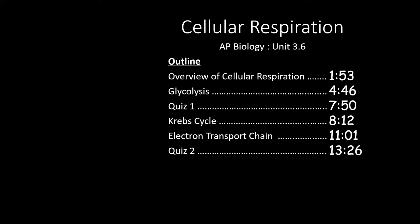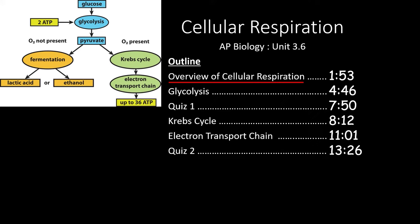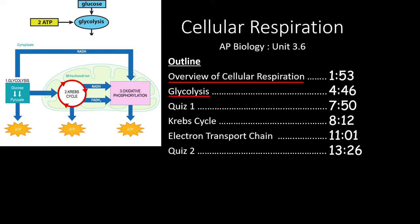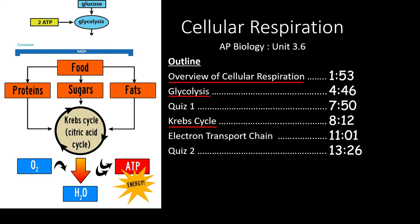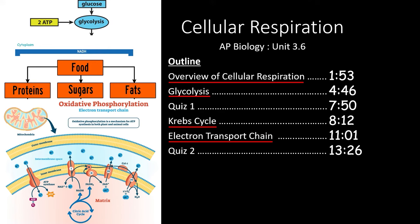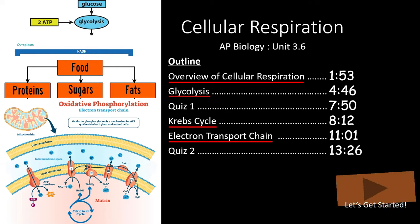In this video, we'll be covering section 3.6 of the AP Biology Curriculum. We'll start with an overview of the entire process of cellular respiration. Then we'll take a closer look at glycolysis, the first step in cell respiration. After the first quiz, we'll examine the Krebs cycle and how it fills electron carrier molecules using the products of glycolysis. Finally, we'll see how these electron carriers power the electron transport chain in the mitochondrial inner membrane to produce enough ATP for the entire cell. If you only need to review one of these sections, feel free to skip forward to the times outlined here. Otherwise, let's get started!